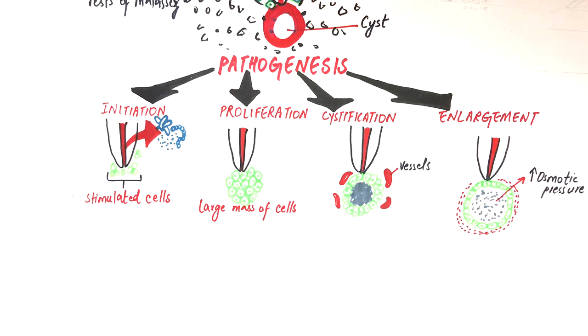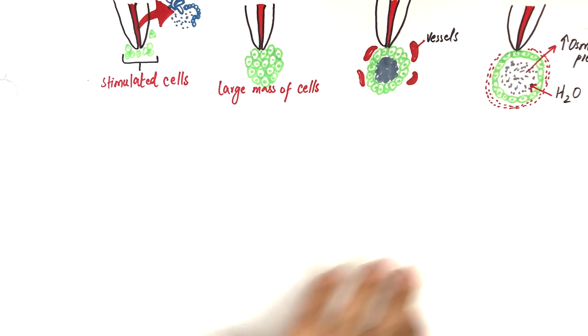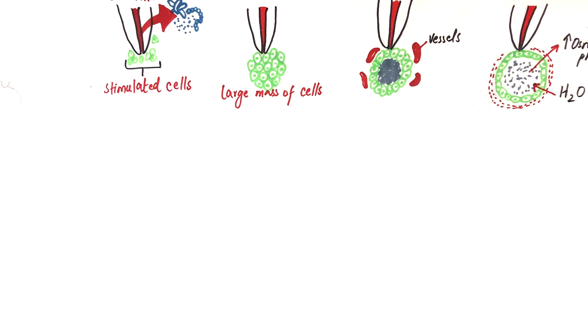In addition, in order to accommodate this extra fluid, the peripheral cells secrete certain enzymes like collagenases in order to resorb the surrounding bone, hence facilitating expansion of the cyst.